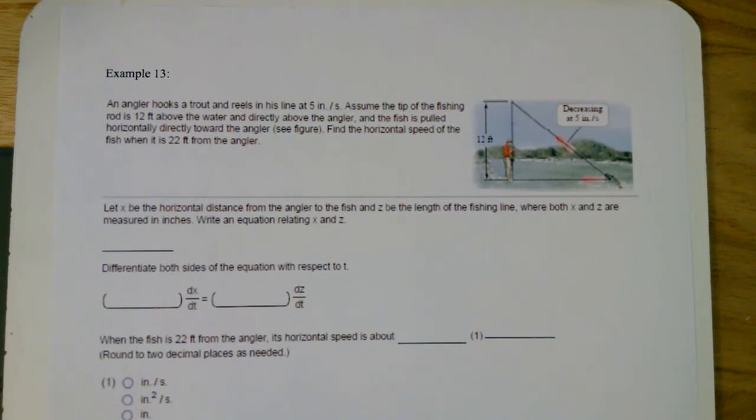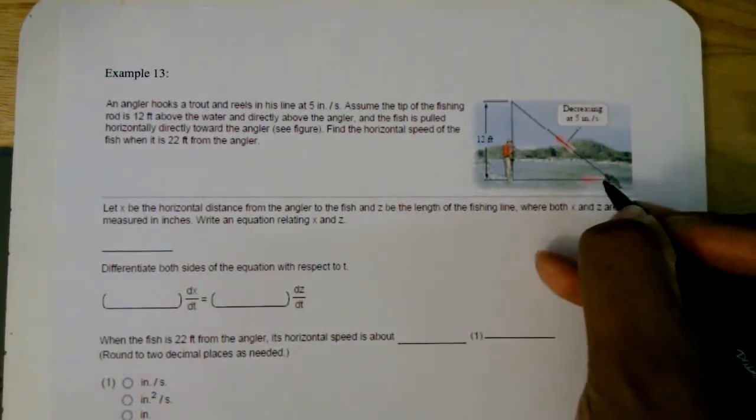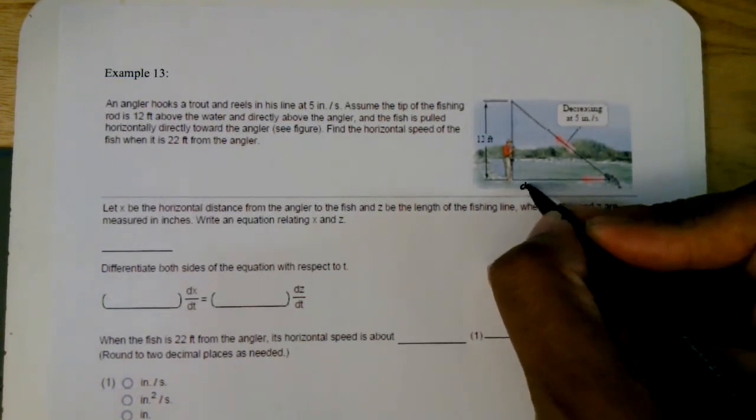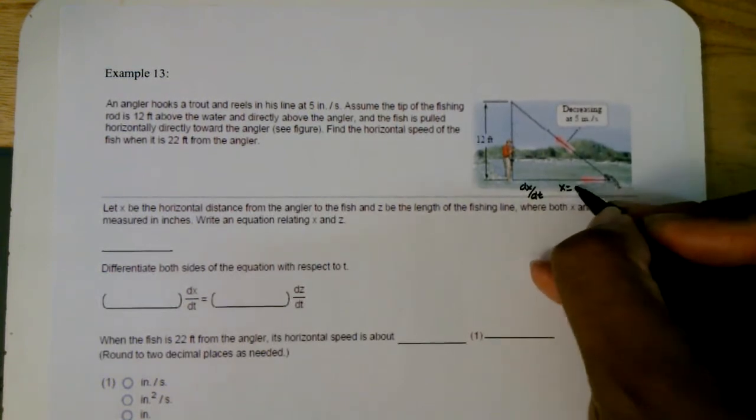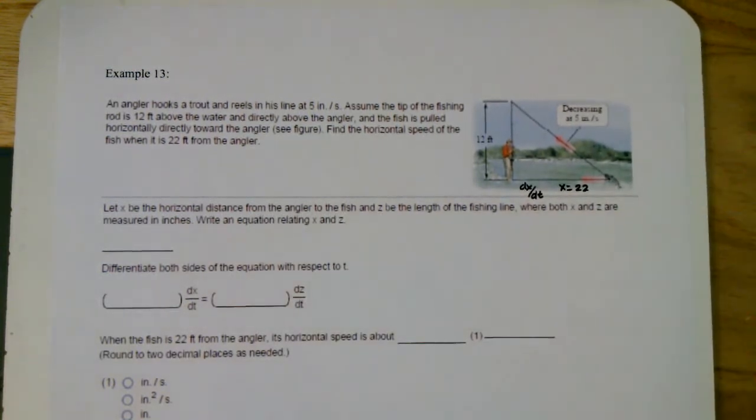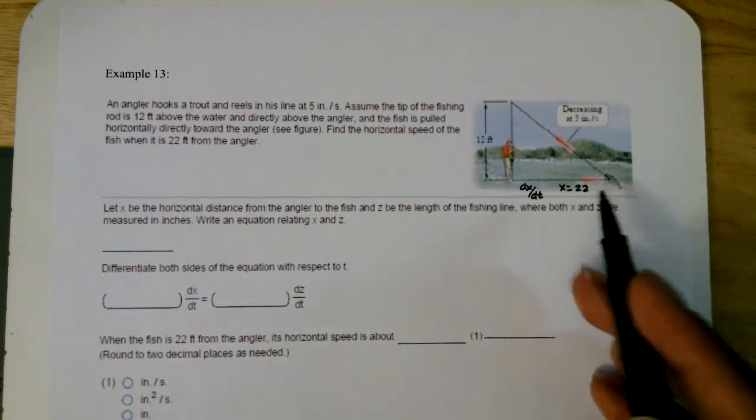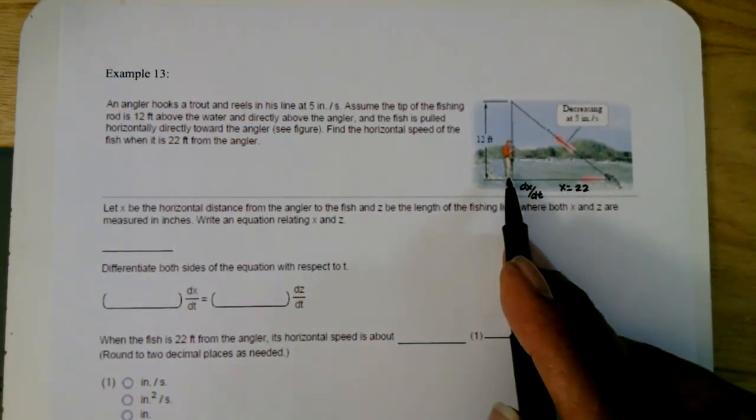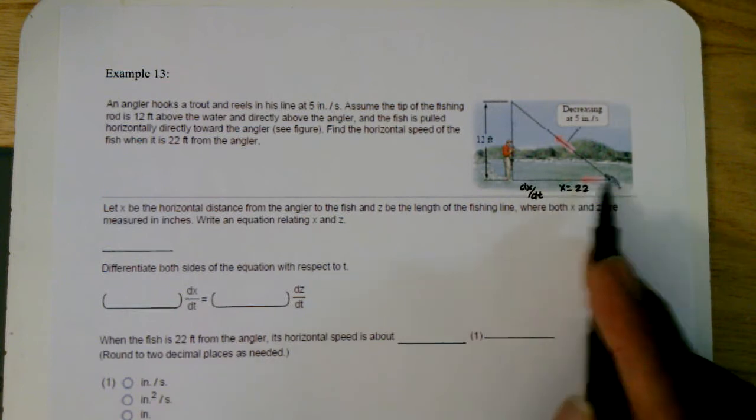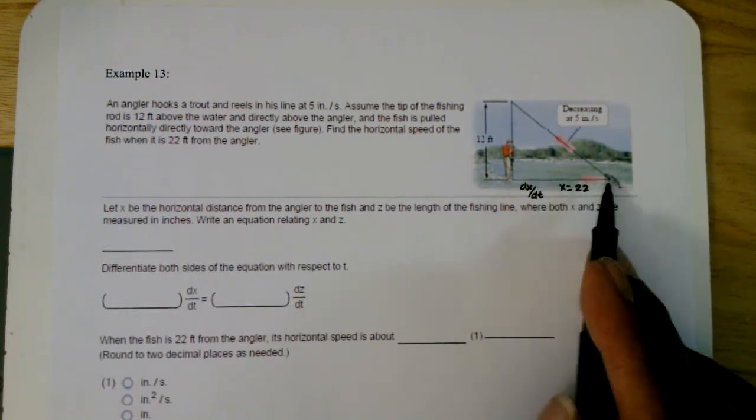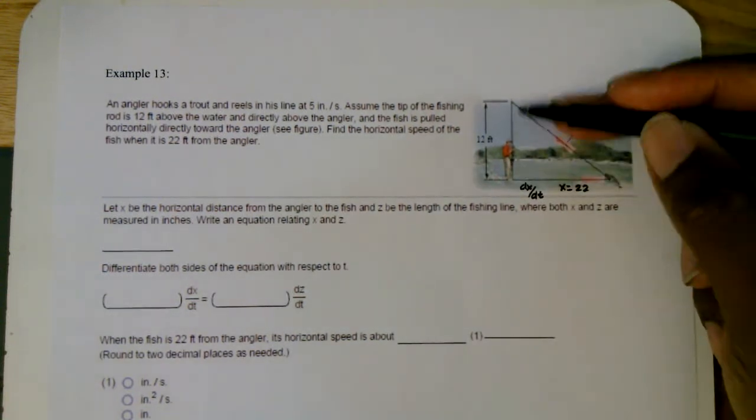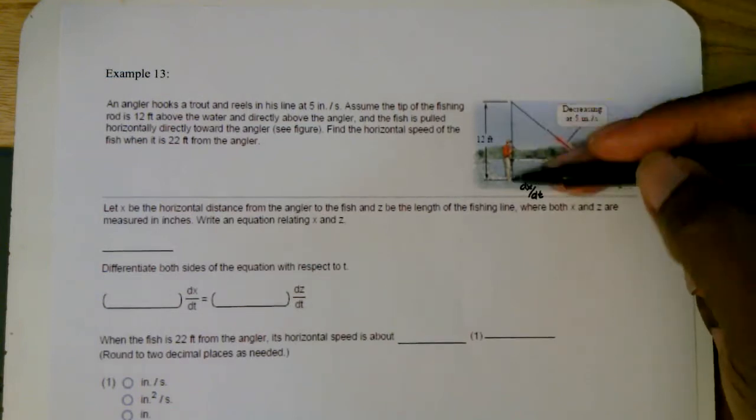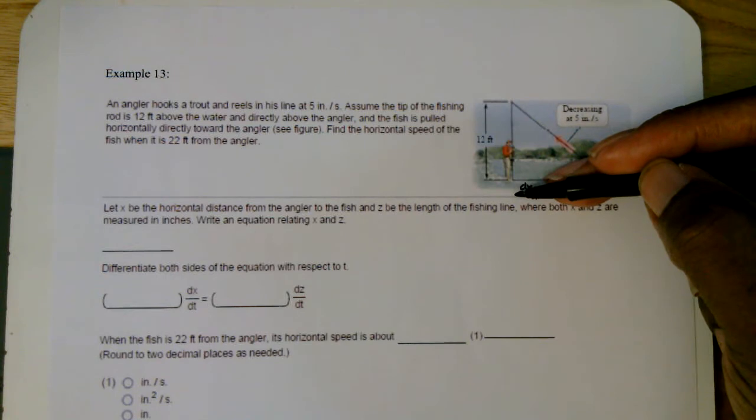So here I want to find the horizontal speed of the fish when it is 22 feet away from the angler. So actually we're finding dx/dt. And our x is going to be 22. As you can see here, when it's 22 feet from the angler, it's coming in. We want to find that horizontal speed when it's coming in. And this height of 12 feet, that is a fixed number right there. This will not change at all.